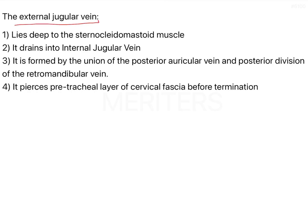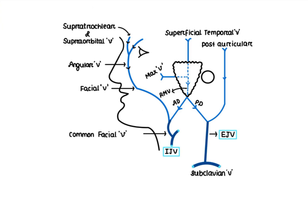We should know the course of the external jugular vein, so here is a very famous figure. The supraorbital and supratrochlear veins together form the angular vein. At the angle of the mouth, it is called the facial vein, and this facial vein is generally attached to the anterior division of the retromandibular vein.